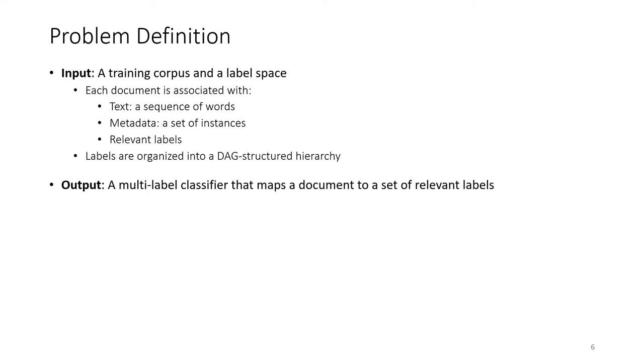Based on the previous ideas, we define our task as follows. The input is a training corpus and the label space. Each document in the training corpus is associated with its text, which is modeled as a sequence of words. If a document has multiple text fields, we simply concatenate them into one sequence. The document is also associated with its metadata instances and the relevant labels, where labels are organized into a DAG-structured hierarchy. And the output should be a multi-label classifier that maps a document to a set of relevant labels.